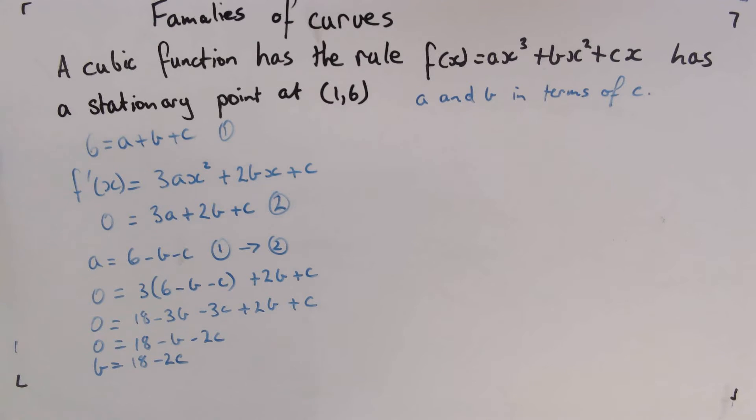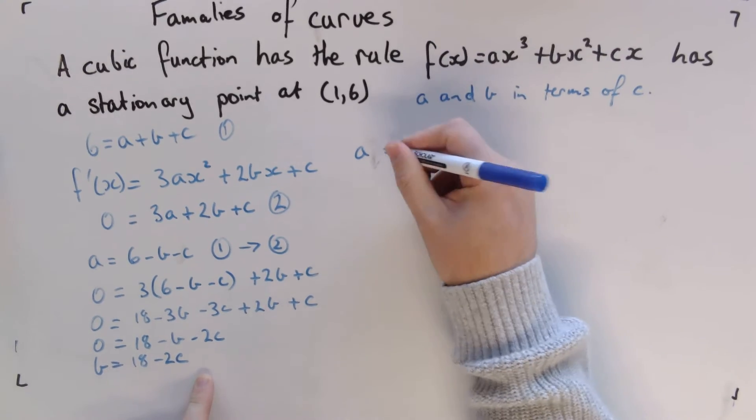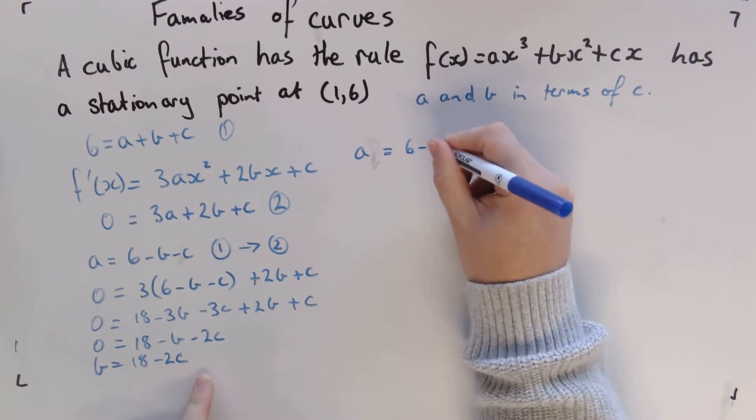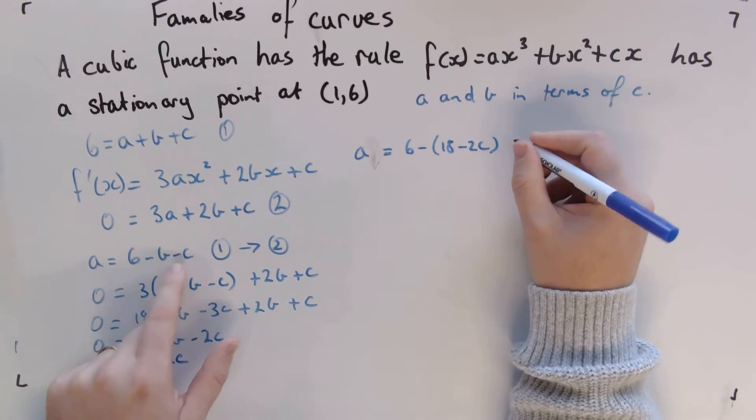So I've got that one so far. Now we need to work out what our value of a is. So we can sub this value of b in this equation to work out what a is. So we're going to get a = 6 - (18 - 2c) - c.